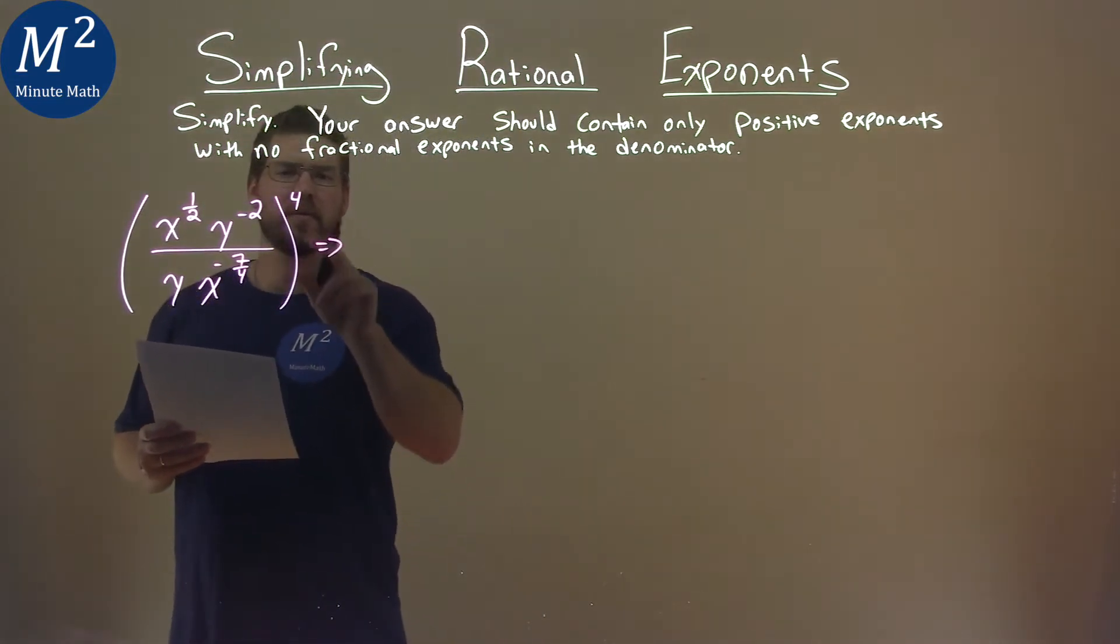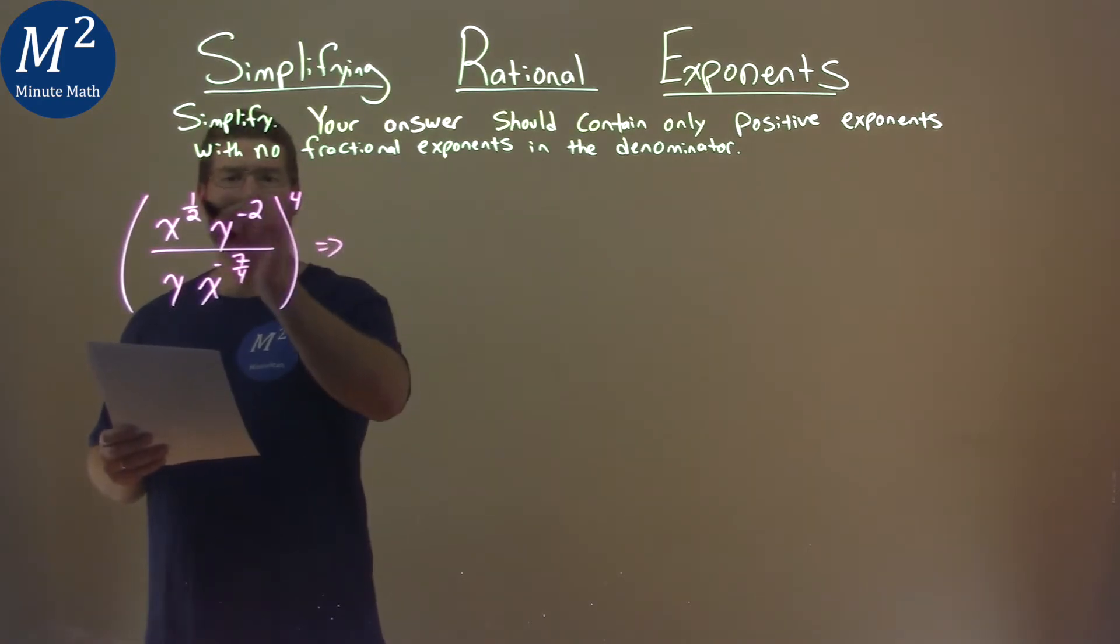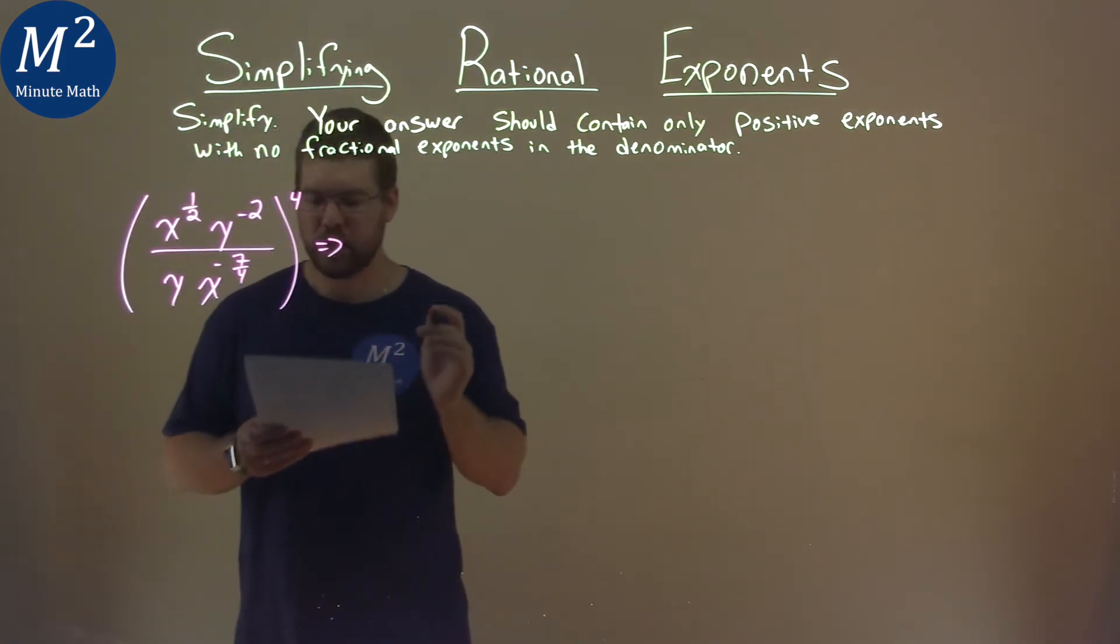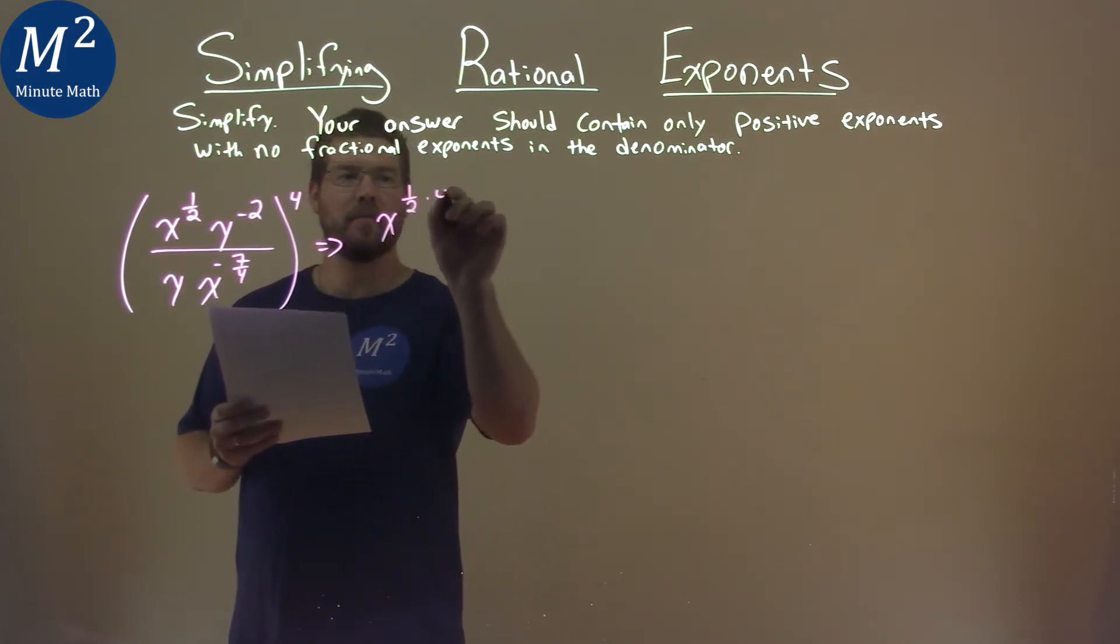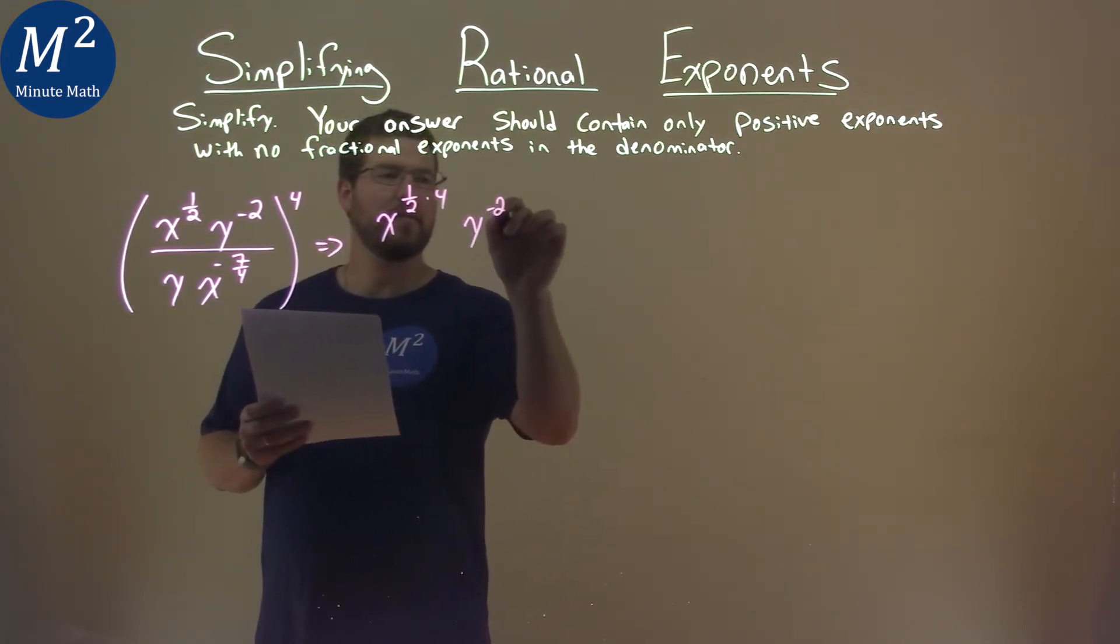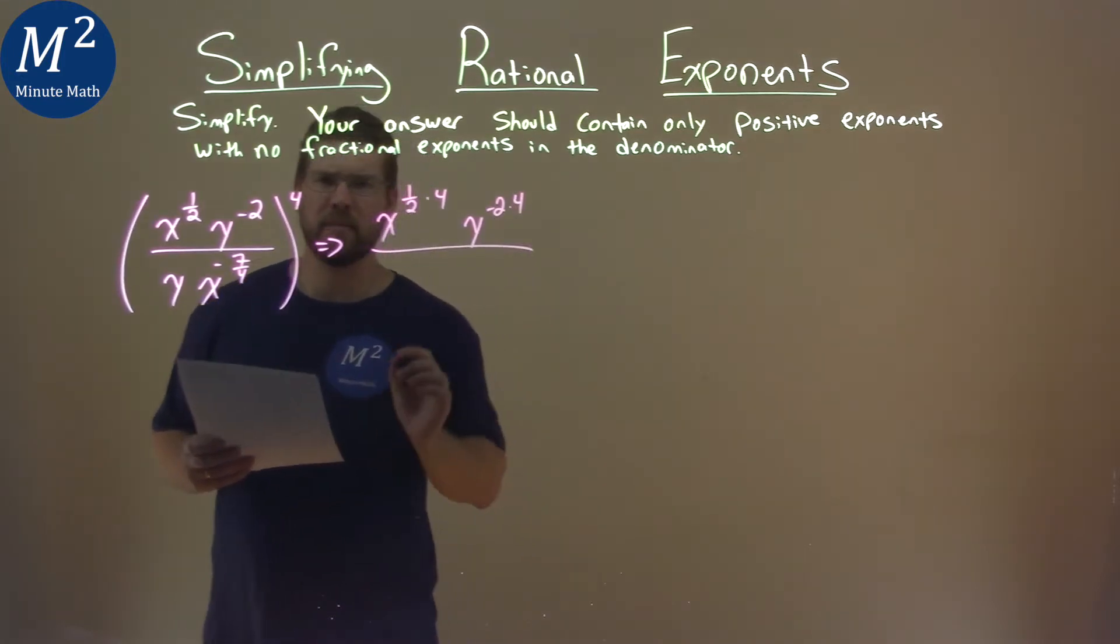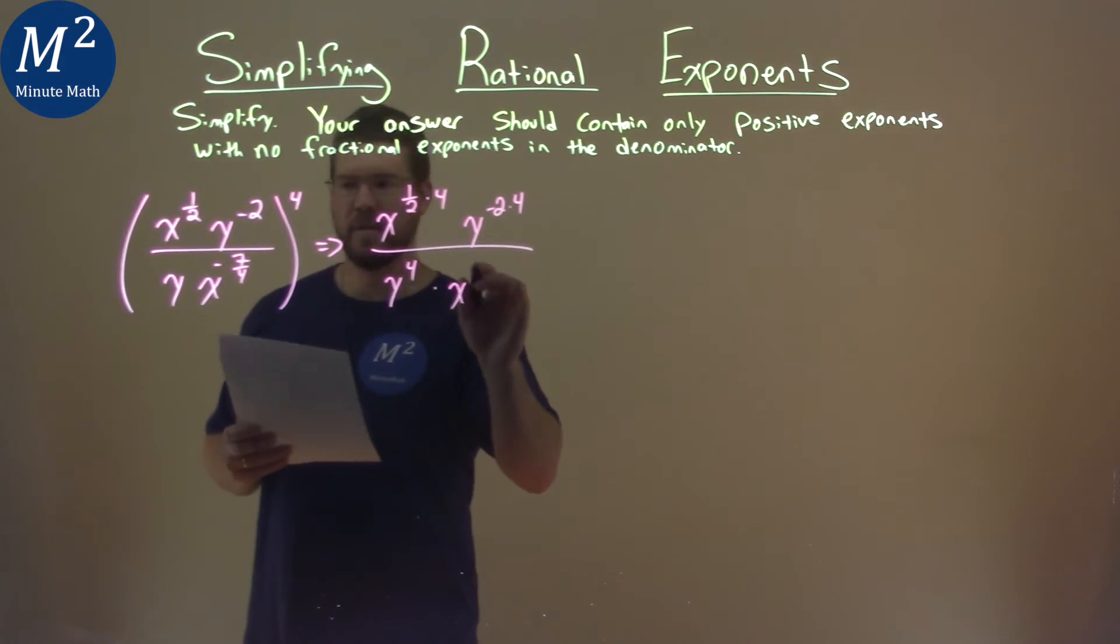The first thing I'm going to do is, that fourth power means it has to be multiplied to the exponent of every single one in here. So we have x to the 1 half times the 4, y to the negative 2 times the 4, and take your time writing this out. y to the fourth power, and then x to the negative 7 fourths power times the 4.